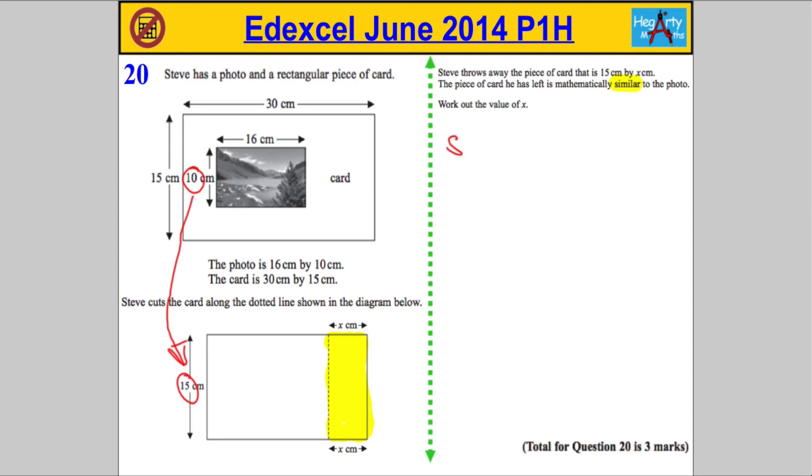So I'm gonna get the scale factor. The scale factor we normally find by doing the larger side divided by the shorter corresponding side. So scale factor is going to be 3 over 2 or 1.5.